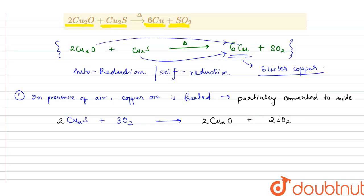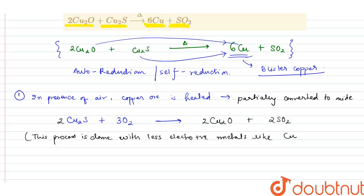This process is carried out with less electropositive metals like copper, mercury and lead.